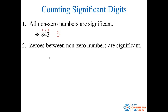Rule number two says that zeros that are between non-zero numbers are significant. So for example 307 — the zero here in the middle has been sandwiched between the three and the seven. So this is still three significant figures: the three, the zero, and the seven are all significant.